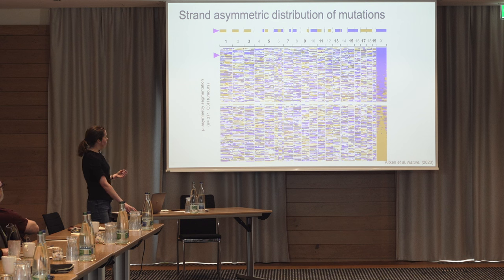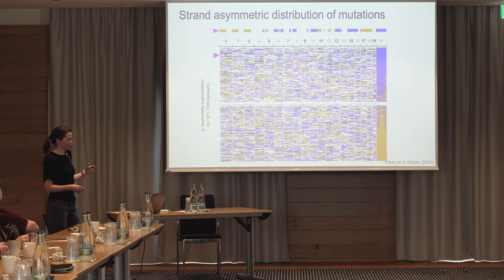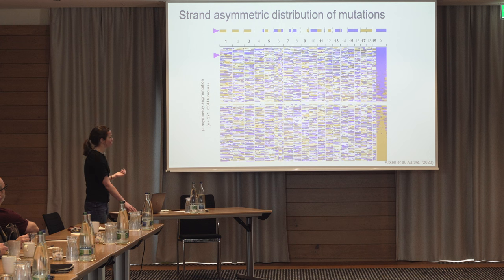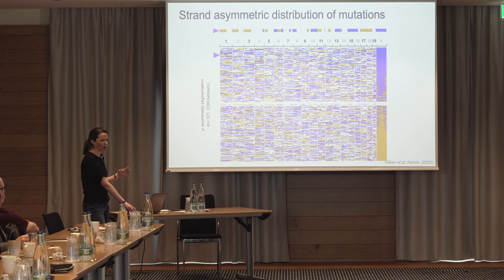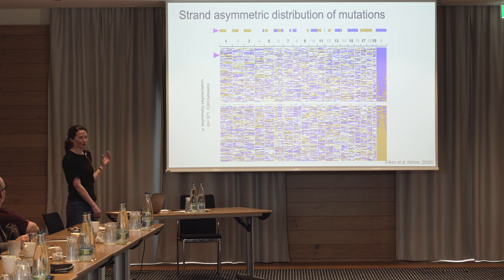Looking at all 371 tumours together — each row is one tumour — you can see that in all the tumours you get this chromosome-scale strand-asymmetric distribution of mutations across the genome. This was completely unexpected, and we spent quite a lot of time making sure this was actually real and not some kind of weird artefact in the analysis. It was Martin Taylor, who's in Edinburgh, who found this and eventually convinced us all it was real. So how do we explain it?